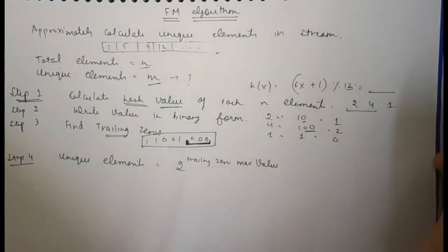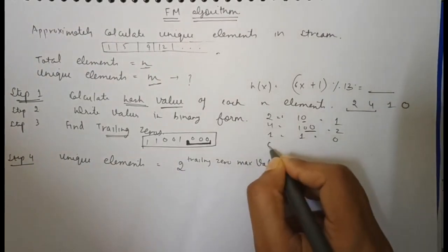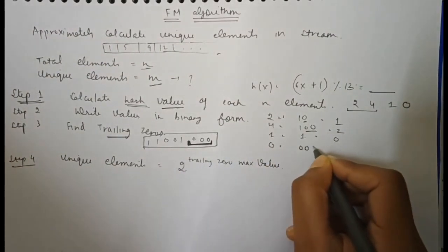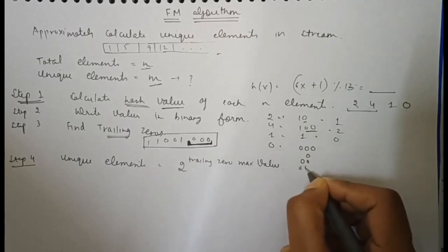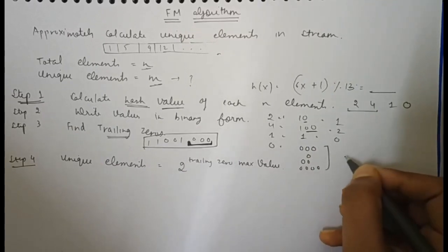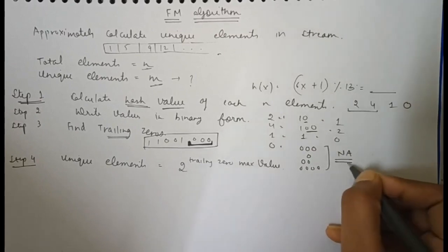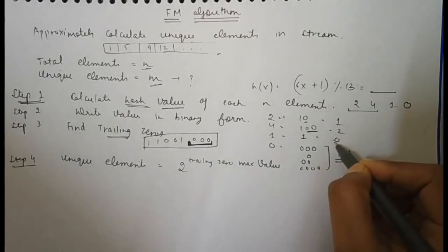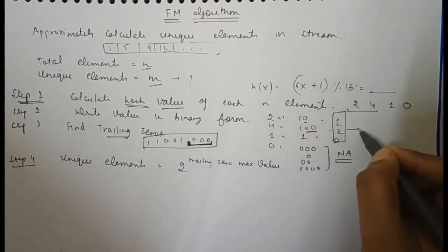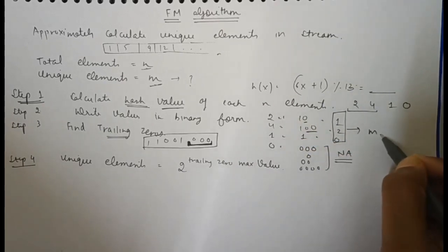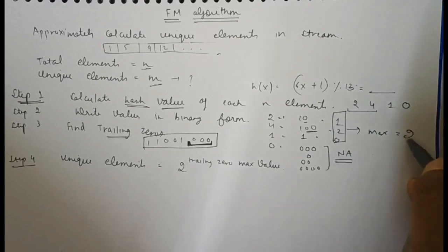Suppose we are given the value 0 — what is the trailing zero value? Zero can be written in many ways, so we can't define the trailing zero value for 0, and we will take it as NA. For the remaining trailing values for each value, we take the maximum value. The maximum trailing zero value here is 2.